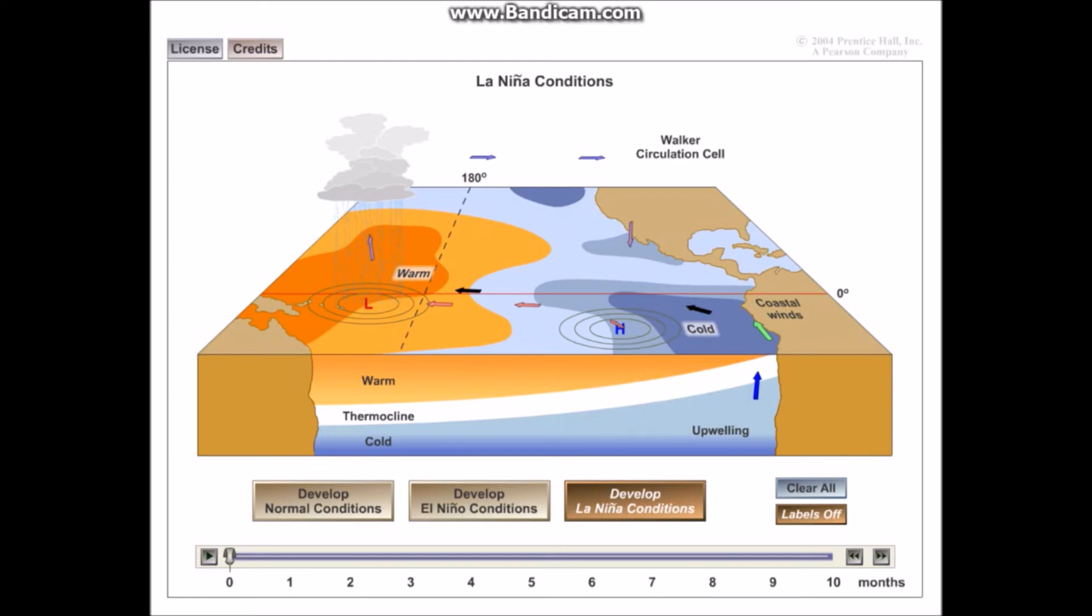Finally we have La Niña. Now, on this map over here you can see that we have normal conditions currently. La Niña is kind of like a pendulum. You go from normal conditions to El Niño and after El Niño it tends to swing back towards normal, but sometimes that swinging back, as a pendulum does, it overshoots and it becomes stronger than normal. And that's what La Niña is. It's stronger than normal conditions.